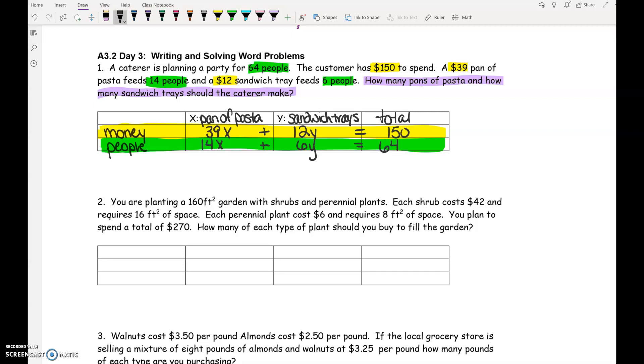Once you have the equations written, you now have some options. You could try to solve this by substitution. I wouldn't recommend it. I would probably solve this one by elimination. To solve it by elimination, remember, you need to get one of your variables to go away when you add them together. Could we make 12 and 6 match somehow? Yeah, we would multiply the bottom equation by negative 2. That would give us negative 28X minus 12Y equals negative 128.